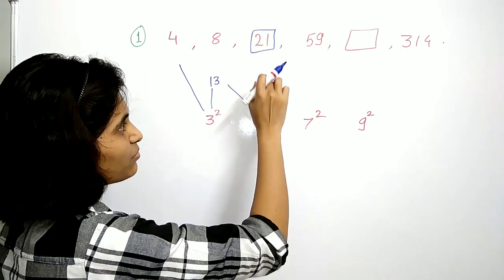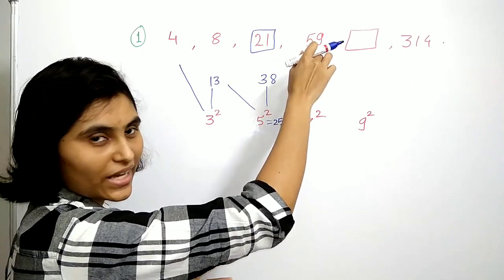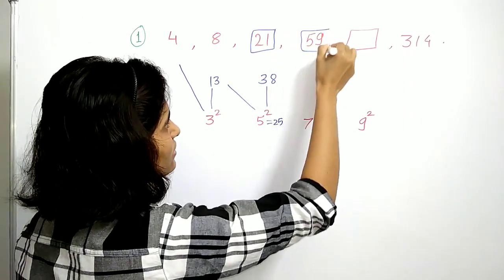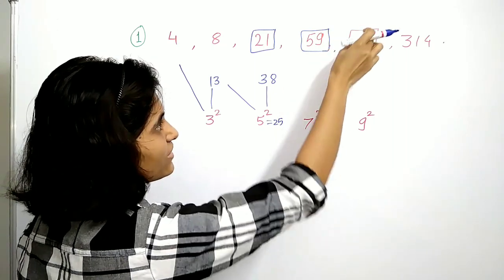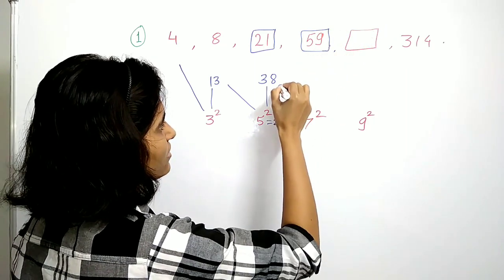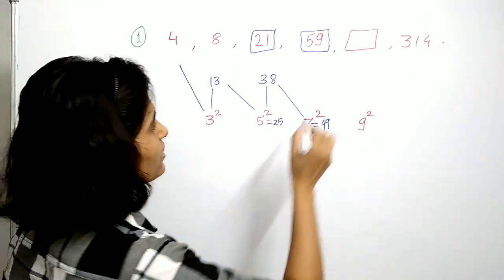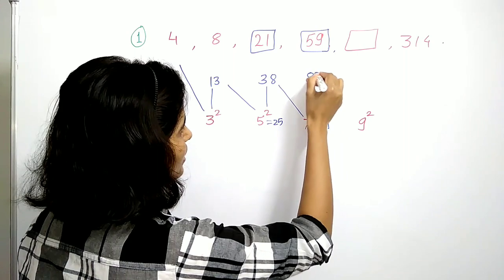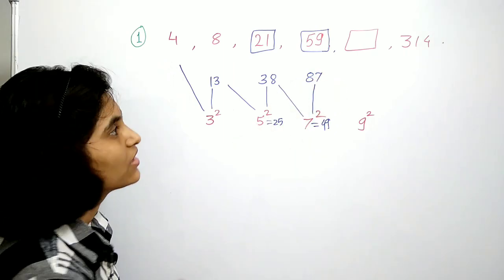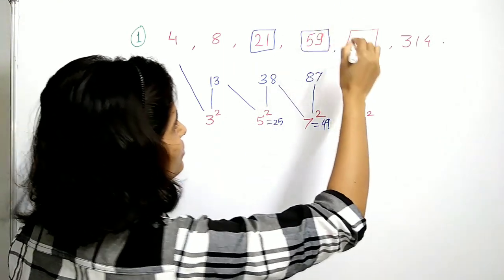Now add these two numbers: 21 plus 38 gives us 59. This is done. Now to get this number, you add this 38 with this 7 squared, that is 49, which gives us 87. Add these two numbers, we get 146.